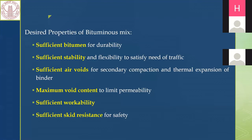The second desired property is sufficient stability and flexibility to satisfy traffic needs. Bituminous mix is used to construct pavement that must support traffic volume and load. If it is not stable enough, it cannot fulfill its purpose. Regarding flexibility — if the bituminous mix is not flexible enough, meaning it is very hard and brittle, then under traffic load it will crack instead of undergoing elastic deformation, initiating deterioration.